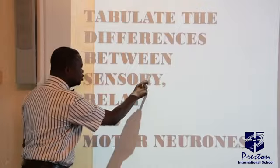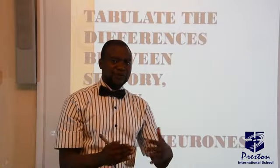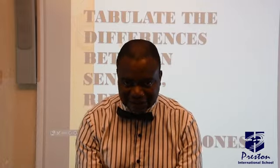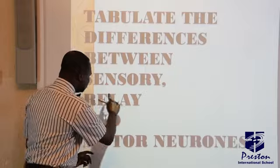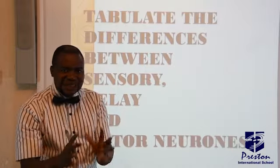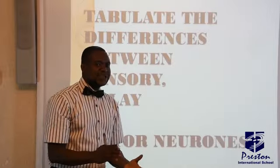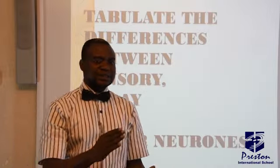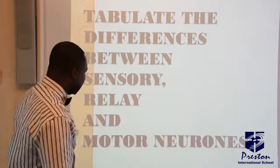Sensory neurons conduct messages from receptors towards the central nervous system. Relay neurons are found basically within the central nervous system. Motor neurons take messages away from the central nervous system to effectors, where actions are produced.